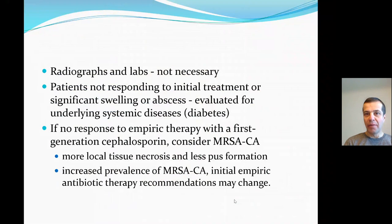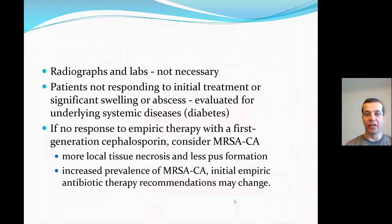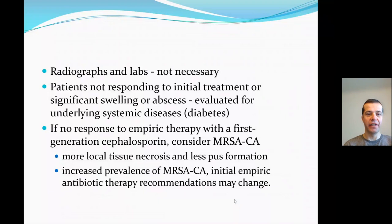Imaging and labs are not necessary. Patients not responding to initial treatment or with significant swelling or abscess development should be evaluated for systemic diseases like diabetes, which would slightly worsen the prognosis. If there is no response to empiric therapy with a first-generation cephalosporin, we should consider community-acquired MRSA, which creates more local tissue necrosis and sometimes less pus formation. With the increased prevalence of community-acquired MRSA over the past decade, initial empiric antibiotic therapy recommendations are changing.